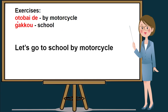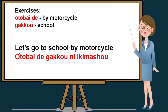And our last exercise will be the use of otobayde, which is by motorcycle. We will also be using gakko or school. So the sentence will be: let's go to school by motorcycle. I'll be giving you five seconds to translate this sentence in Nihongo. Very good. Let's go to school by motorcycle in Nihongo will be otobayde gakko ni ikimasho.